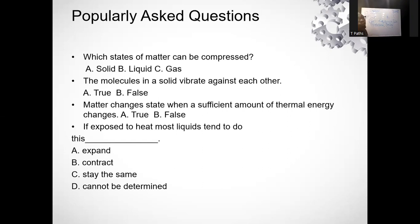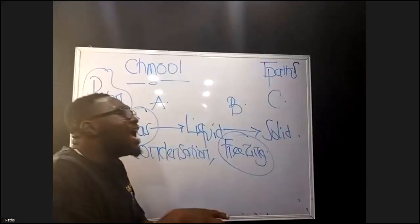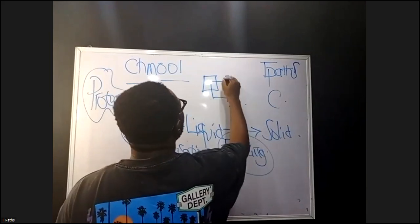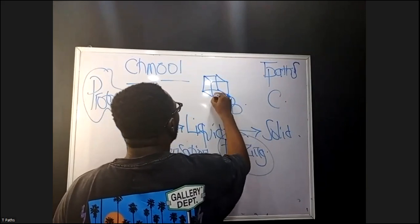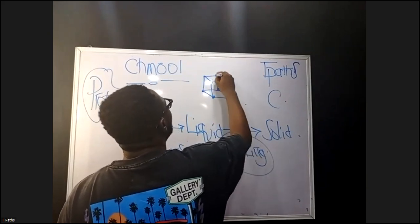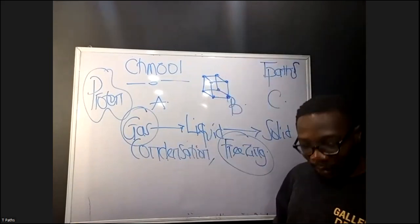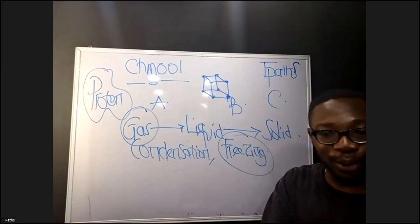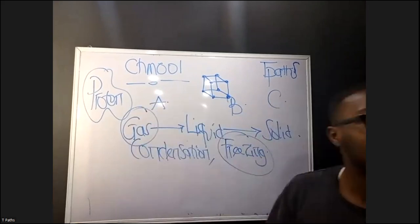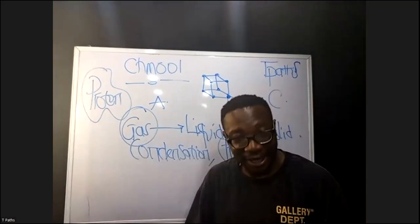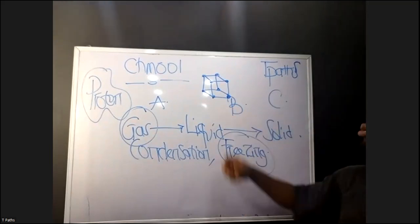The molecules in a solid vibrate against each other — is that true or false? It's true. The molecules of solids are held in a fixed position and they vibrate against each other. For example, if you put your phone on a table and someone calls, the phone vibrates, and someone at the other end of the table can feel that vibration through the solid table. So solids can vibrate against each other.